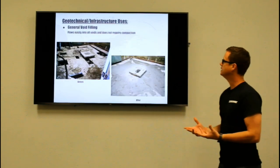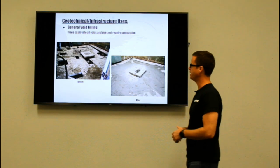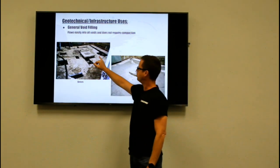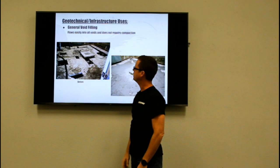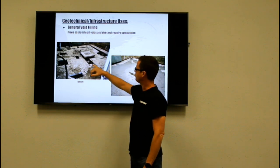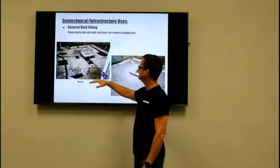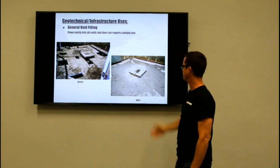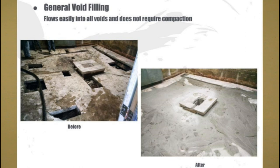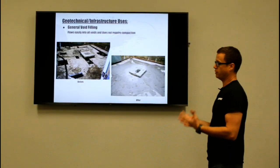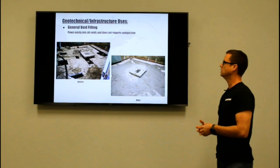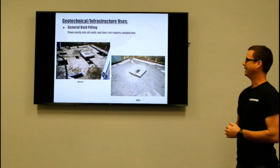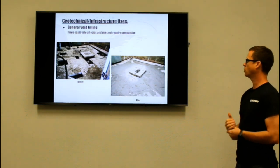General void filling — in these photos we have a floor where the subbase had collapsed. A contractor cut a few holes in the floor and we simply pumped cellular concrete in, and this is the after photo. Cellular concrete was able to move throughout all the voids and completely fill that slab up. The general void filling advantages are that it flows easily and it does not require compaction.